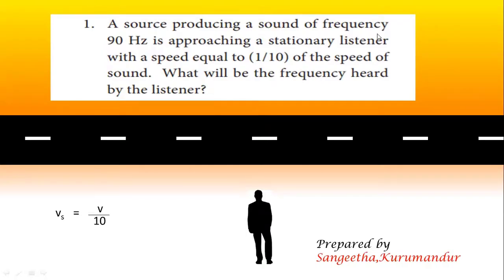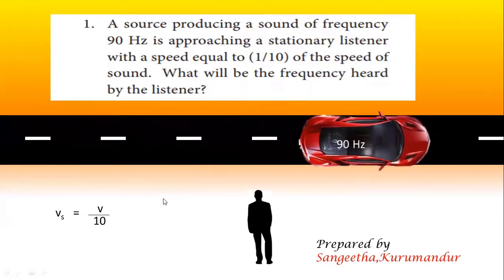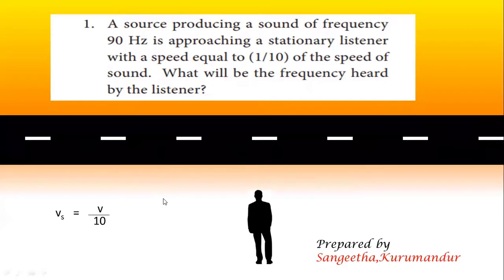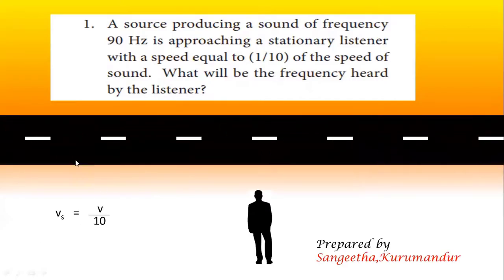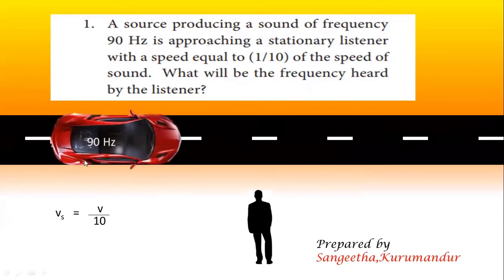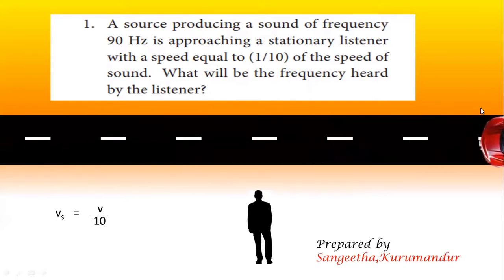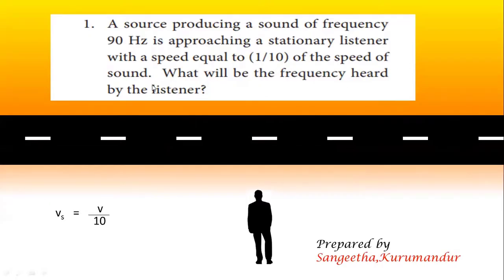A source producing a sound of frequency 90 hertz is approaching a stationary listener. The observer is stationary and the source is moving, producing sound at a frequency of 90 hertz. The speed of the source is 1/10 of the speed of sound.